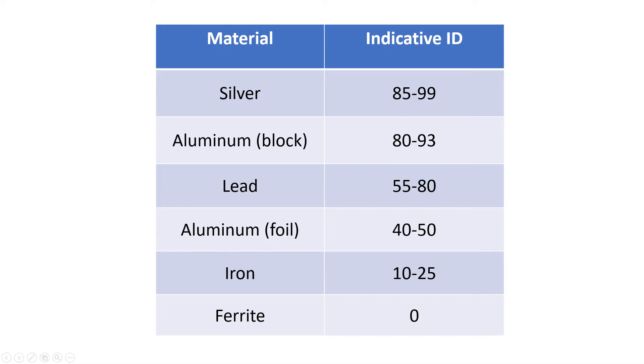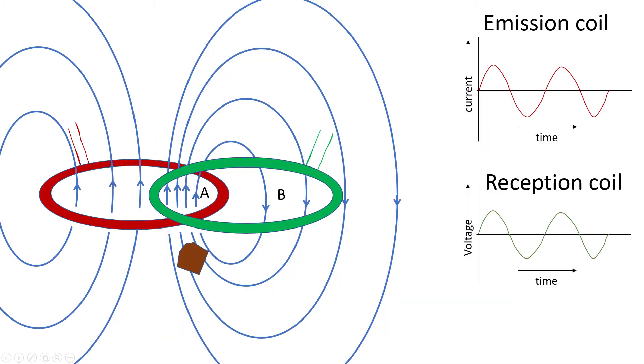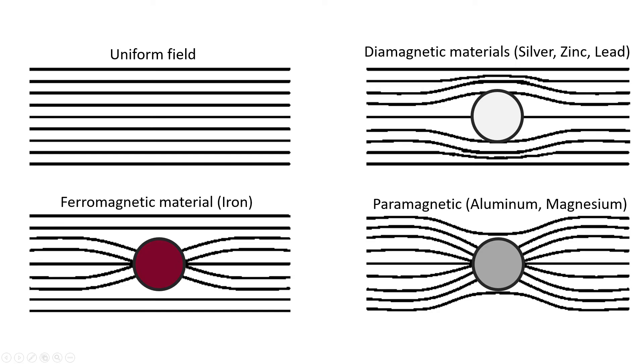So where does this phase shift come from? Well, it is actually not a trivial question. The bottom line is that the presence of a metal changes the inductance of the reception coil. I will try to explain this in a simplified manner. I will do this by looking at how the inductance is influenced by the magnetic and conductive properties of the material.